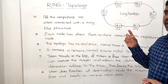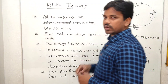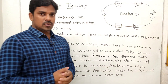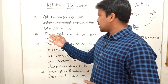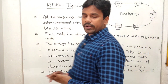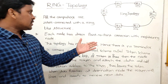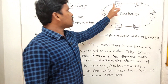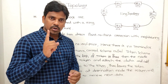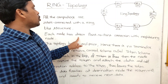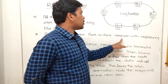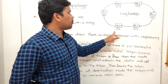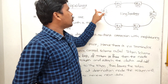All the computers are interconnected with a ring-like structure. Each node has a direct point-to-point connection with the neighboring node. For example, PC1 is connected to PC2 and PC6 via point-to-point connections.